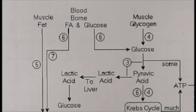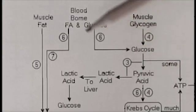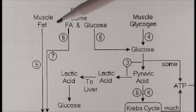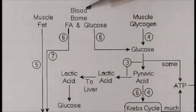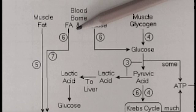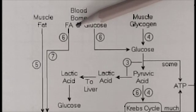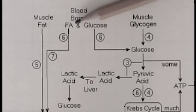The reason marathon runners look so scrawny is because they have very little body fat — they're using blood-borne fatty acids as their major source of energy, and the fatty acids come from stored fat in the adipose tissue.